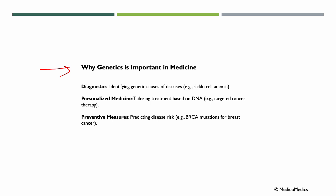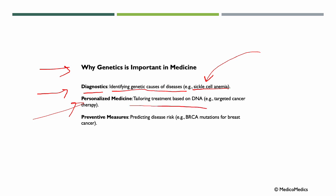Why is genetics important in medicine? First, diagnostics: it helps in identifying genetic causes of diseases — for example, sickle cell anemia. Second, personalized medicine: tailoring treatments based on DNA, such as targeted cancer therapy. Third, preventive measures: predicting disease risk, like BRCA mutations for breast cancer.